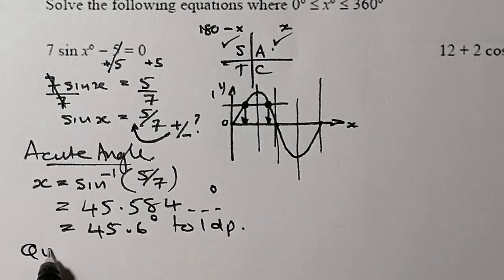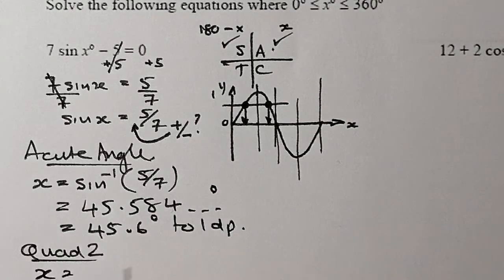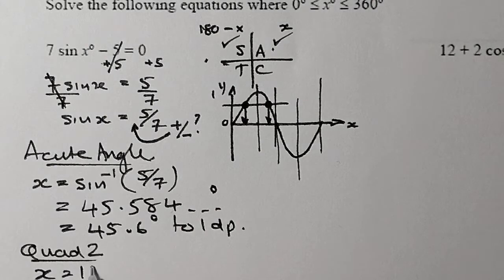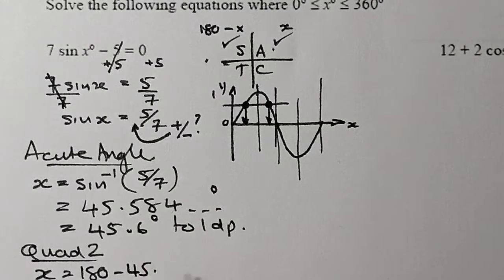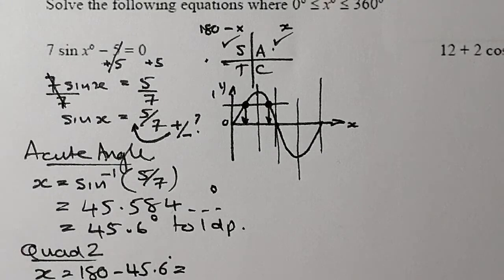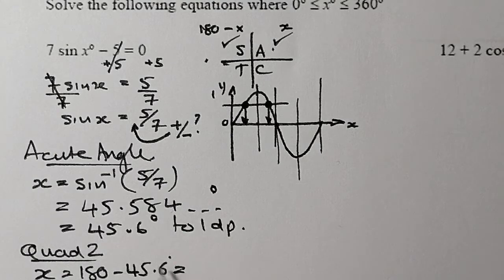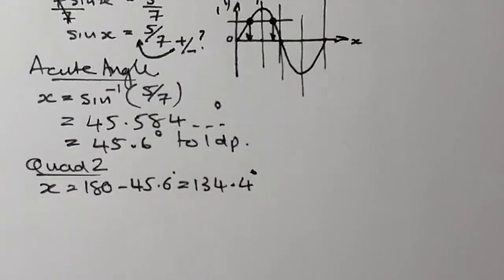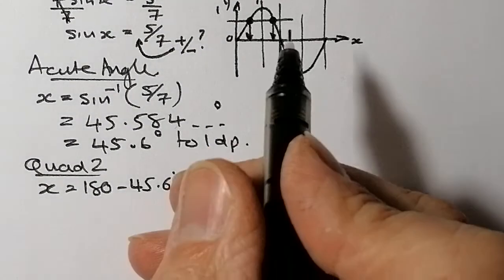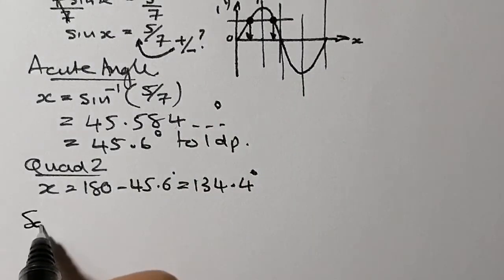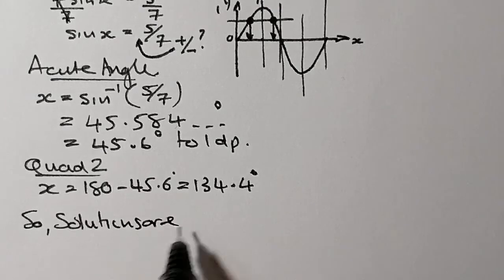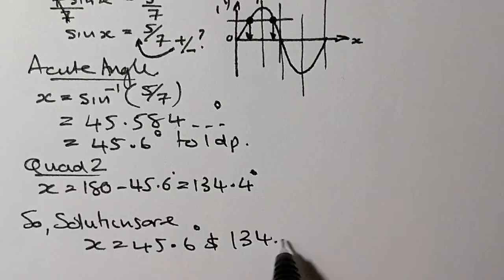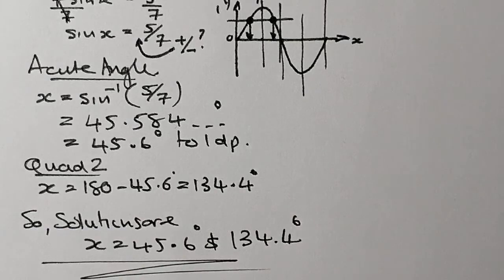The quadrant 2 angle is going to be x = 180 degrees take away the angle I just worked out. That should give me 134.4 degrees. So the solutions are x = 45.6 degrees and 134.4 degrees. That's my final answer for that one.